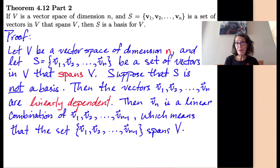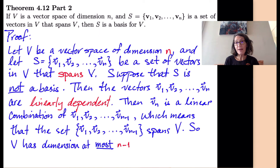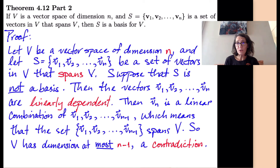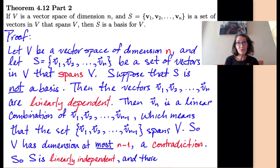So we've got a smaller set — there are only n minus 1 vectors in it. If you have a set of n minus 1 vectors that spans your vector space, then the vector space has dimension at most n minus 1. But we assumed v had dimension n, and now we see it can't have dimension more than n minus 1 — that's a contradiction. So something we assumed was false. S, it turns out, had to be linearly independent. Our assumption that it was dependent was false. So S is a basis: it spans v and it's a linearly independent set, so it has to be a basis for v.